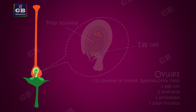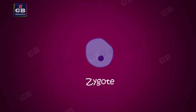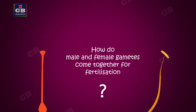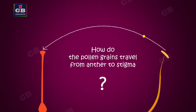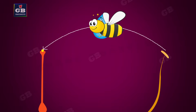You know that fertilization means the fusion of male and female gametes. Then how do these male and female gametes come together for fusion? For that, the male gametes should reach the female gametes. But how do the pollen grains travel from the anther to the stigma?